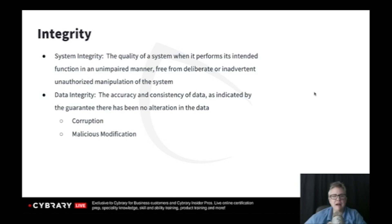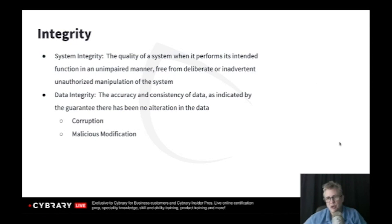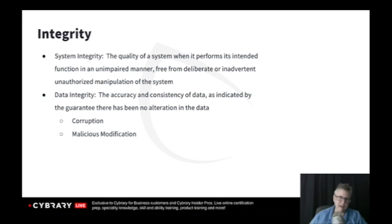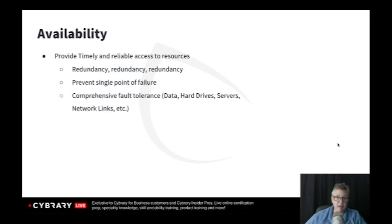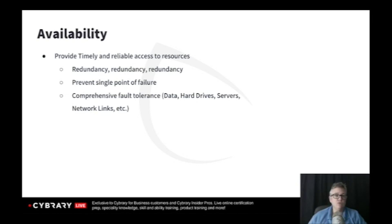The A of the CIA triad — I always ask that because A in security can mean a million different things: authentication, accounting, authorization, auditing. But the A in this case is availability — timely access to resources. The solution there is redundancy and resiliency.